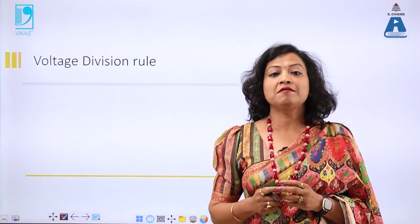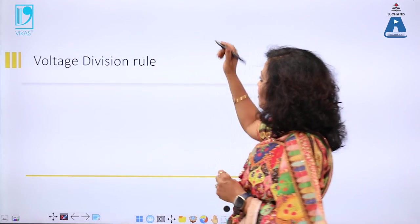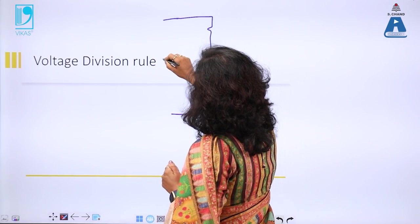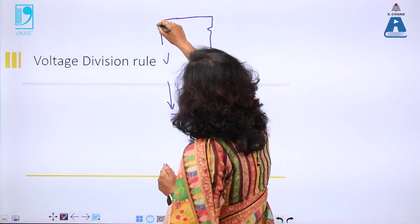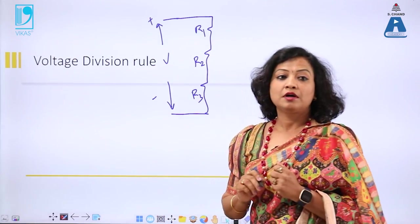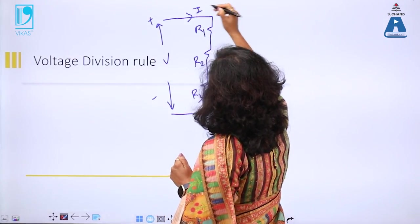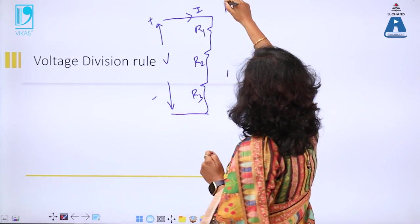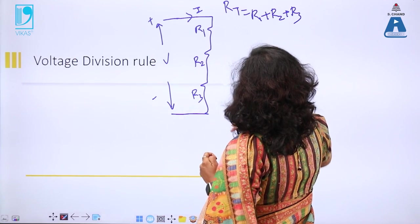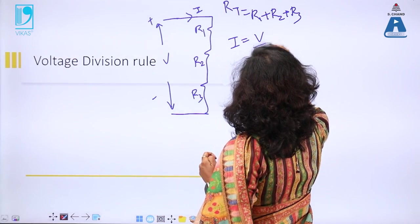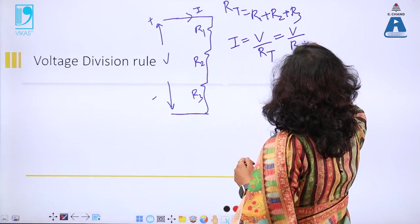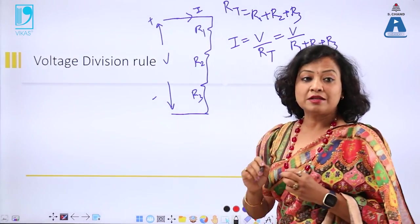As discussed earlier, voltage remains the same in parallel and it divides in series, so this rule is applicable for a series circuit. For example, suppose I have three resistances R1, R2, and R3 in series with a voltage V applied. The total resistance is R1 plus R2 plus R3, and the current in the circuit is V divided by R1 plus R2 plus R3, based on Ohm's law.